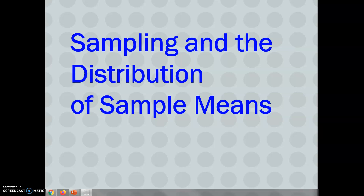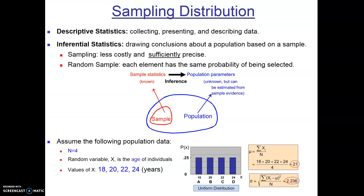In this video I'm going to go through sampling and the distribution of sample means. Let's start out with the concept of a sampling distribution. In descriptive statistics we collect, present, and describe data. In inferential statistics we draw conclusions about a population based on a sample.